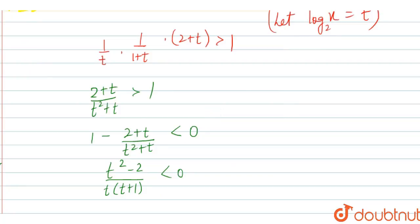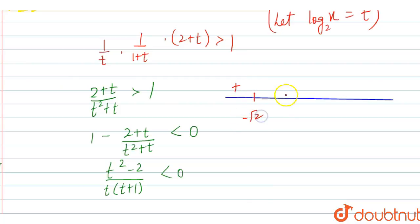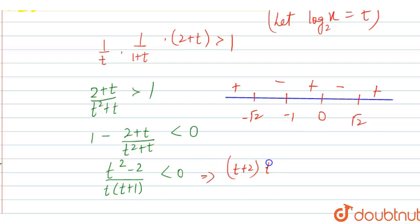We can see this on a number line. The critical points are −√2, −1, 0, and √2. The sign alternates: positive, negative, positive, negative, positive. We can write the numerator as (t+√2)(t−√2), with denominator t(t+1), all less than 0.